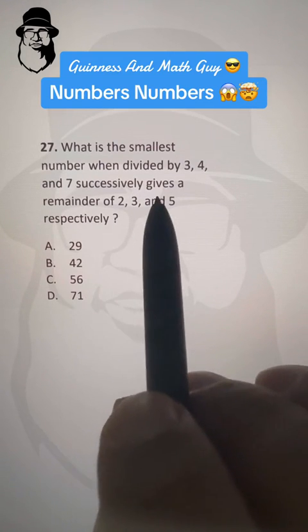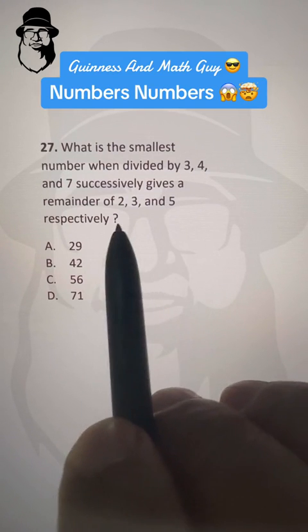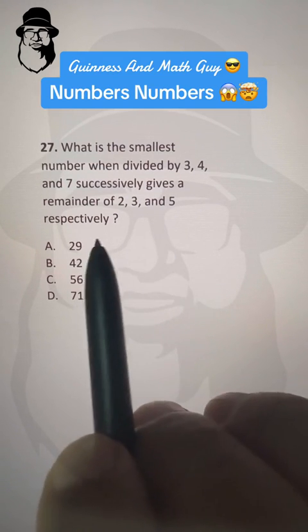What is the smallest number when divided by 3, 4, and 7 successively gives a remainder of 2, 3, and 5 respectively?